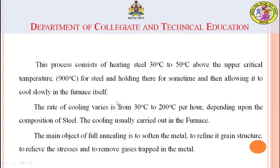In the annealing process, we allow the material to cool in the furnace itself. The cooling rate varies from 30 to 200 degrees Celsius per hour depending upon the steel composition. The main object of full annealing is to soften the metal that has been hardened by mechanical operations, and to remove gases trapped in the metal.